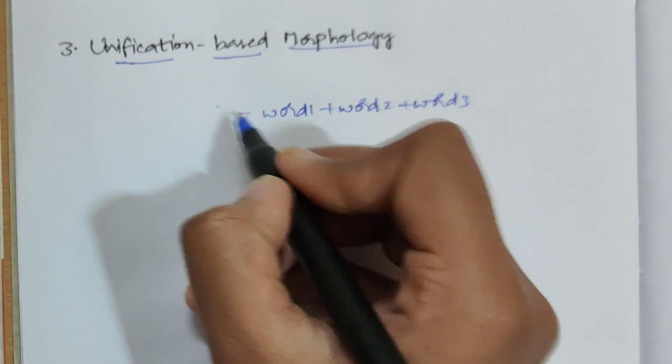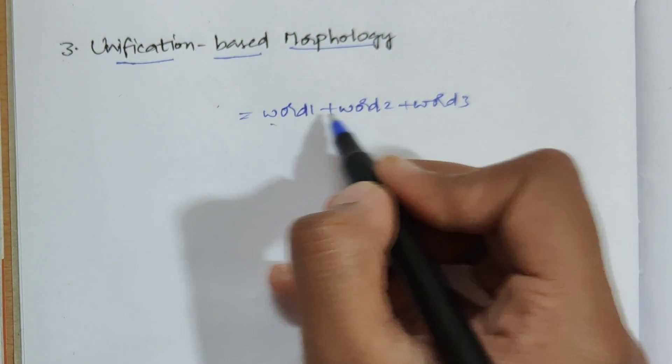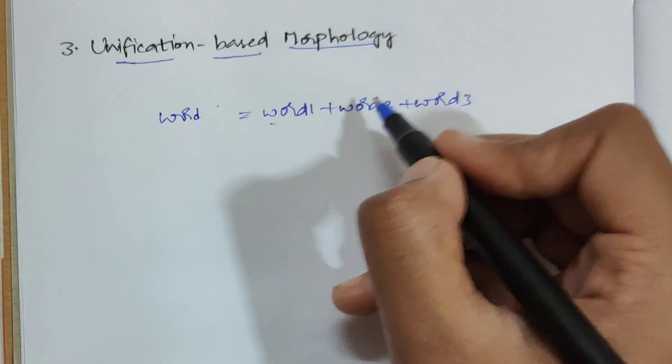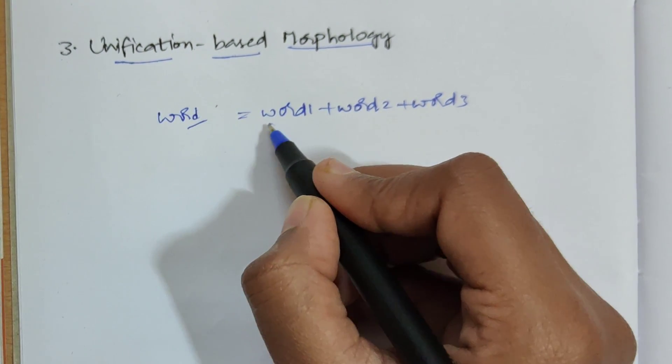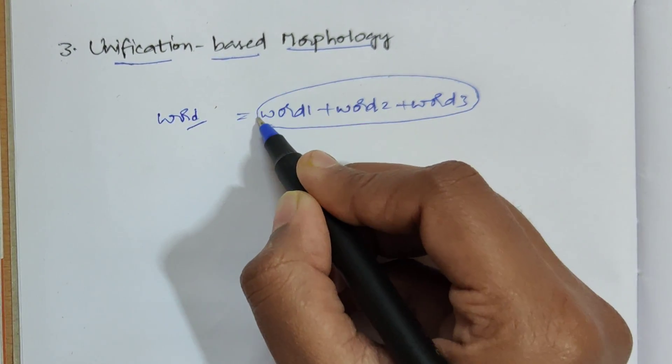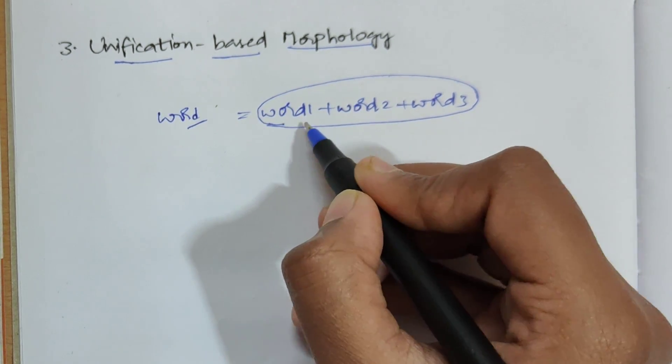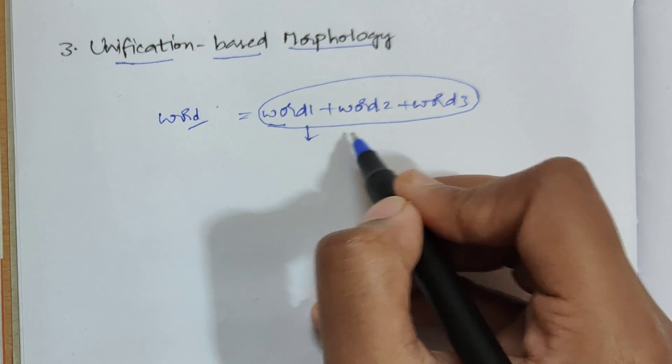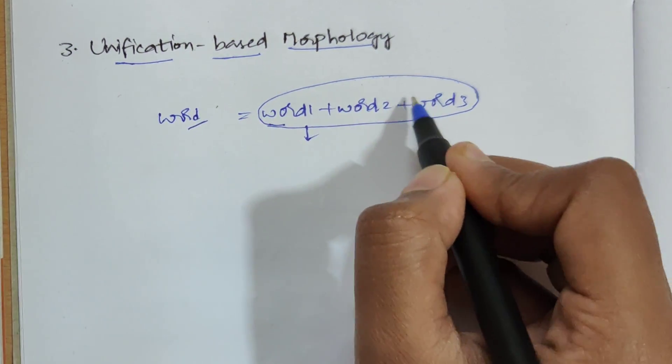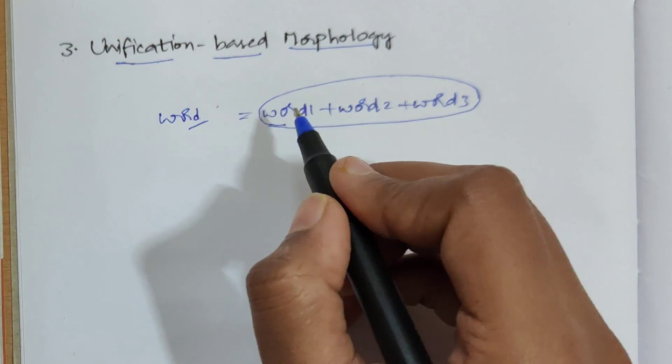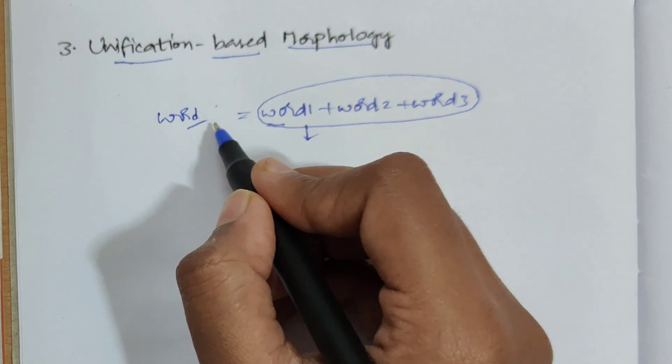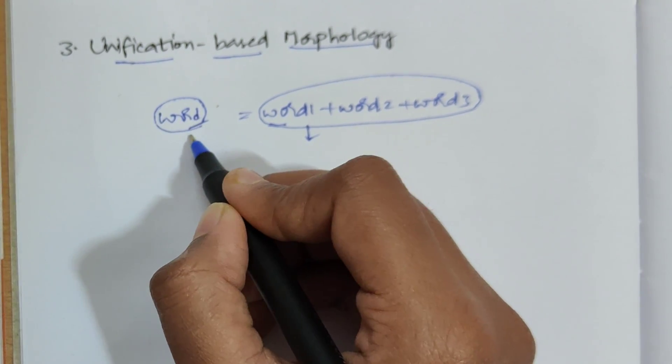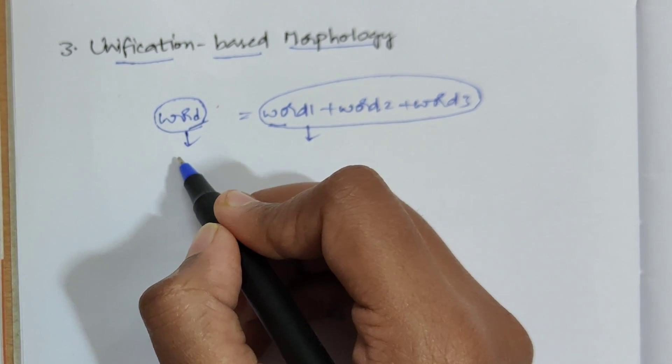So by combining these three words, one particular word is formed. How this particular word is formed by combining all these words is nothing but unification-based morphology. I mean analyzing how these words are actually formed. This unification-based morphology ensures whatever word formed at last is very meaningful, it is a meaningful word.